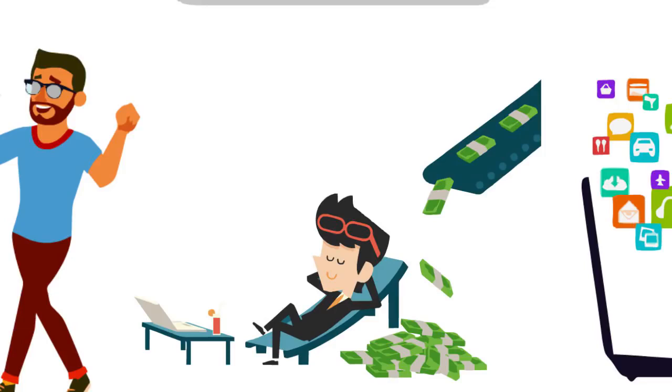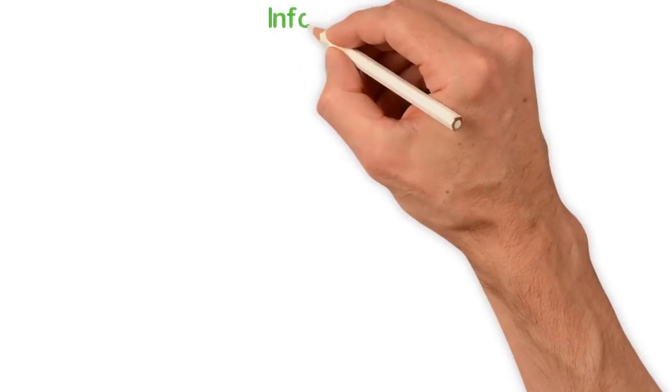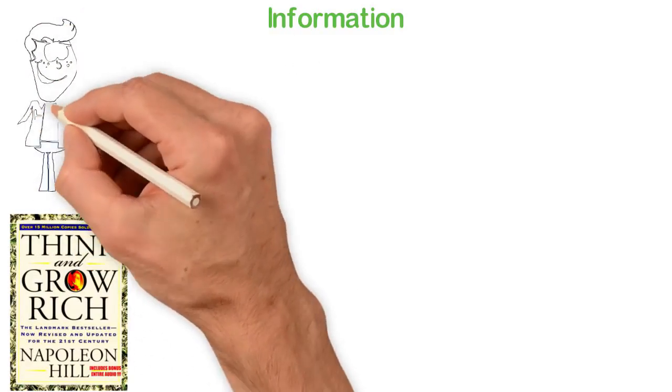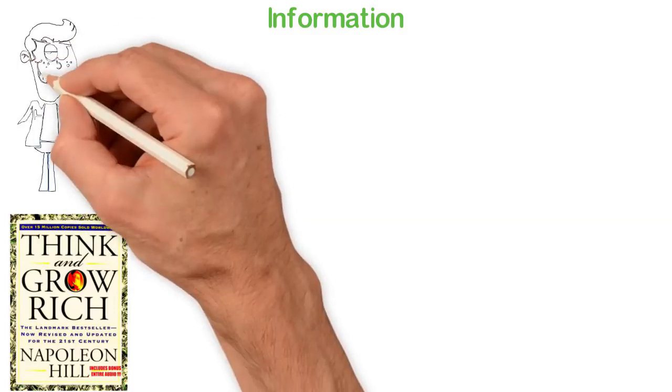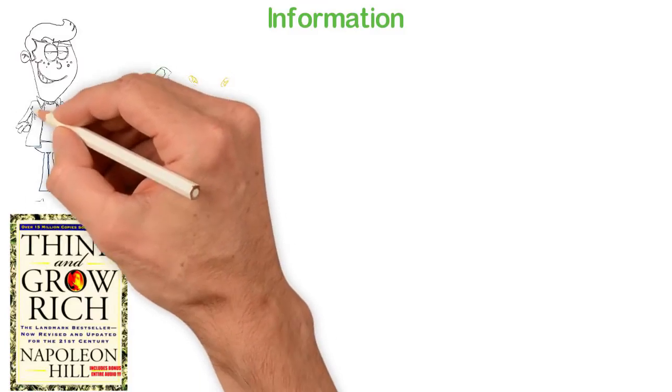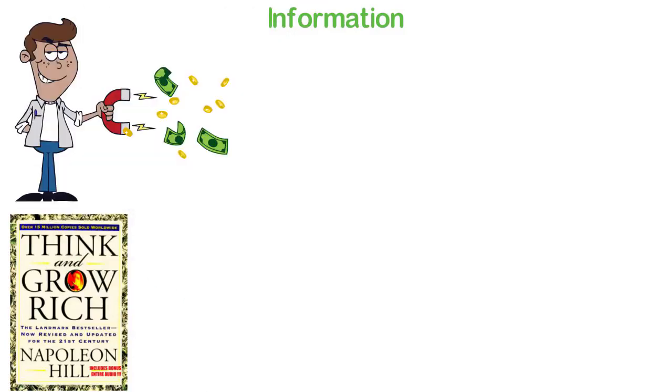Maybe that's even complex for some people to understand. Look at something simpler: information. In the year 1937, Napoleon Hill published a book called Think and Grow Rich. Any book is just paper and ink, but this book has sold 33 million copies and still making money today, more than 80 years after it was published.